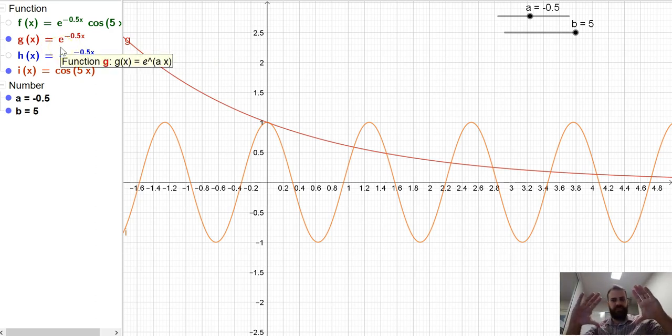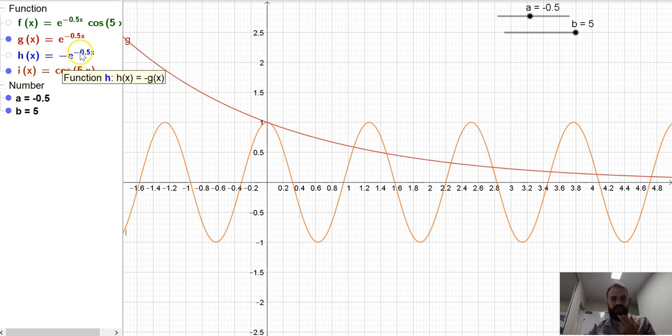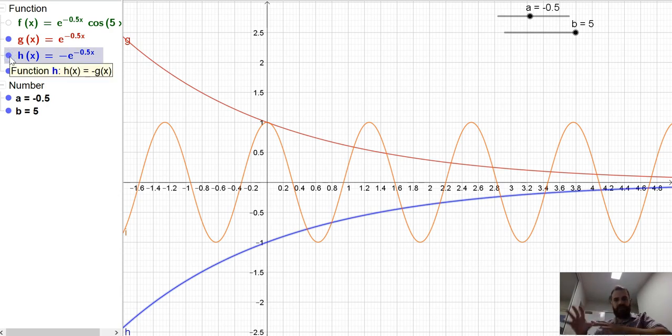Now, if I flip that function, and instead of having e to the negative ax, I have negative e to the negative ax, I get a function that looks like that. So I've just reflected the function in the x-axis. So I've got two functions.